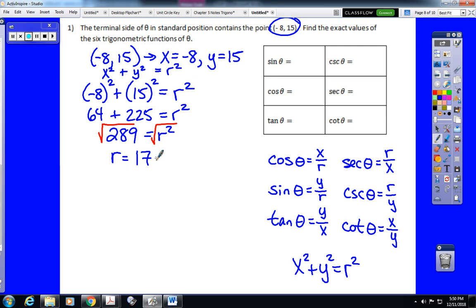From there, all we need to do is take x, which is negative 8, y, which is 15, and r, which is 17, and plug them in to get our six fractions. So sine of theta is y over r. That would be 15 over 17. Now you should put this in the calculator to make sure it doesn't reduce, but I should hope that we all realize that 15 over 17 doesn't reduce. For cosine, x over r would be negative 8 over 17.